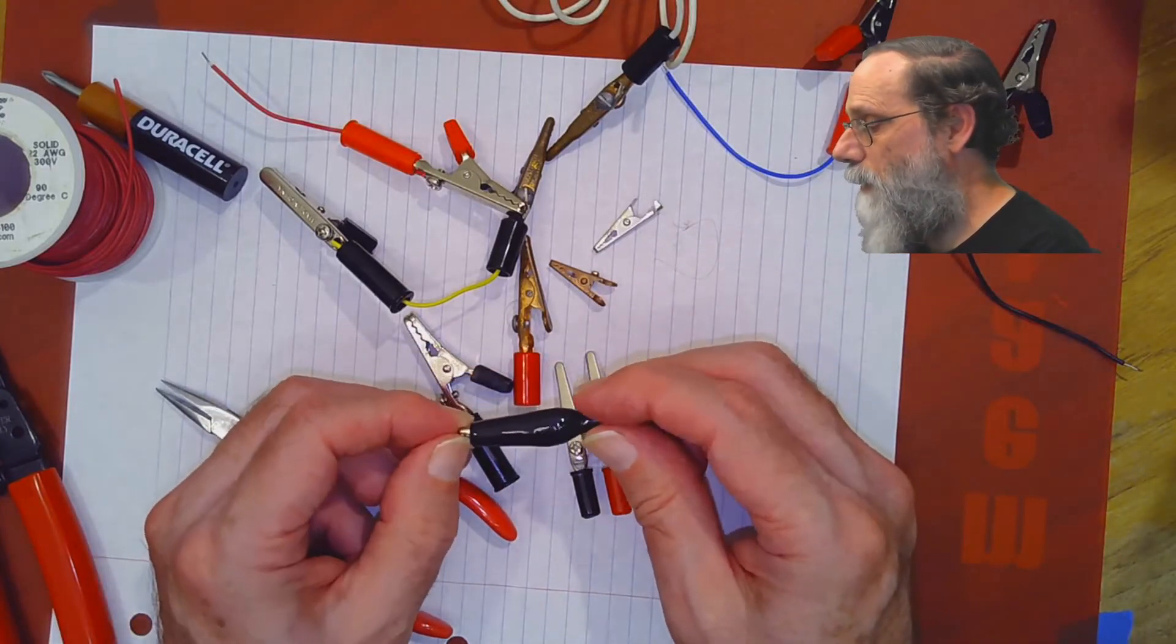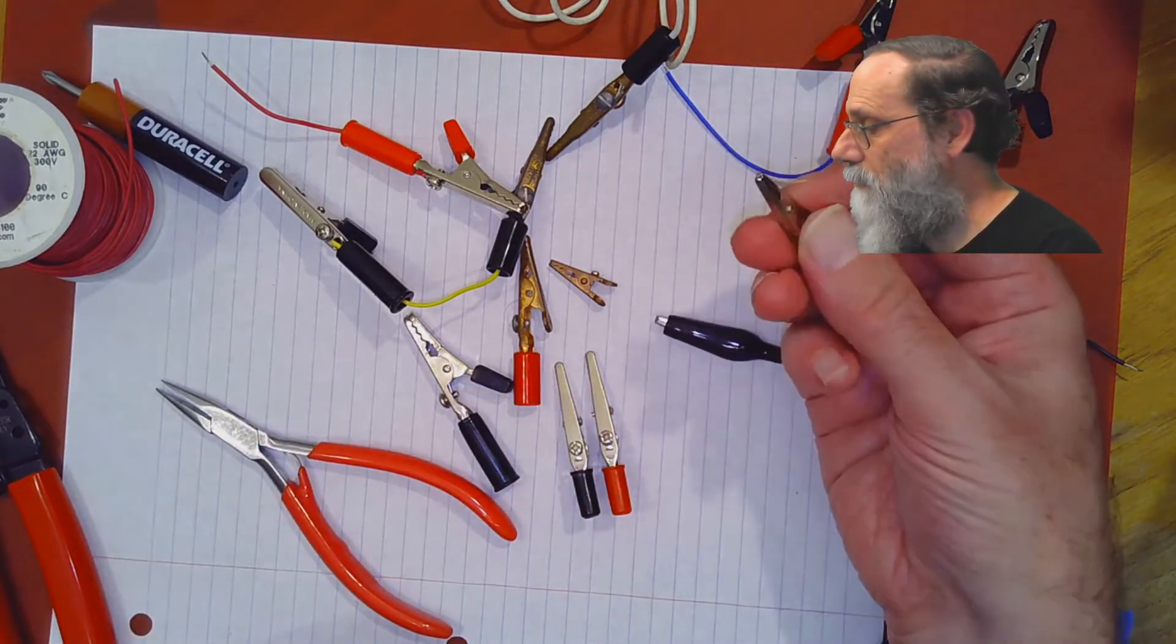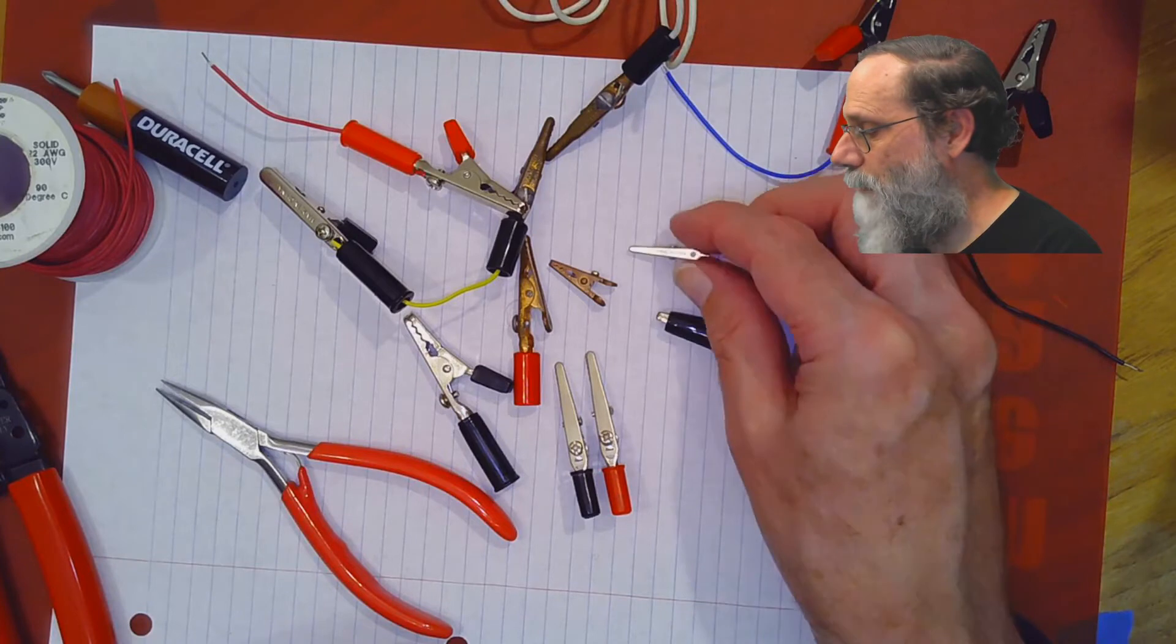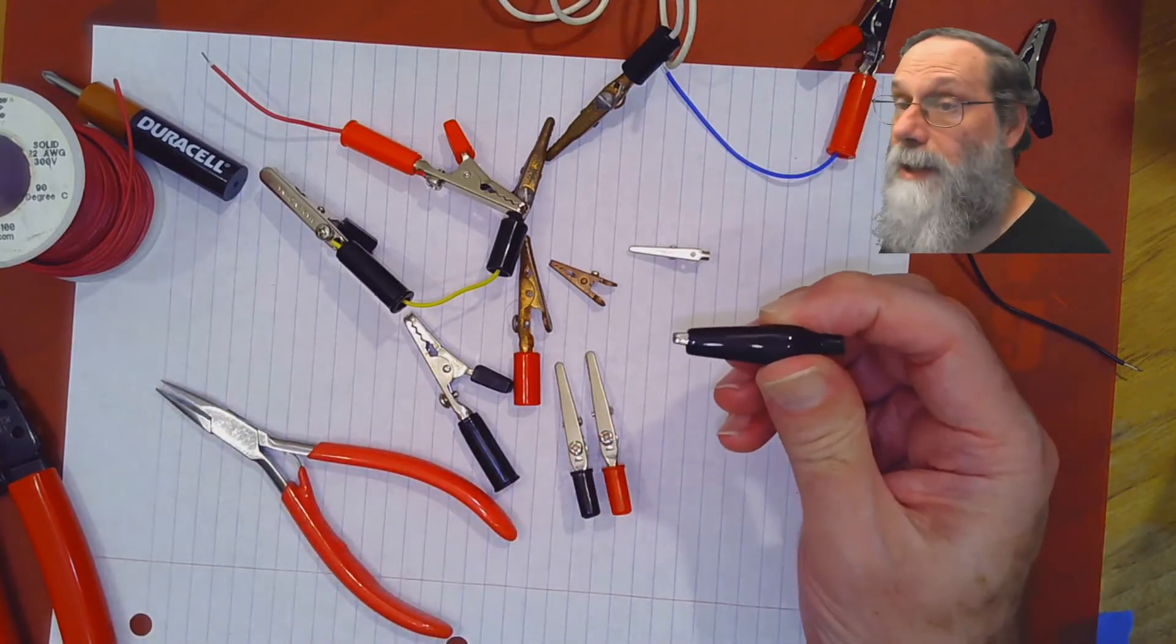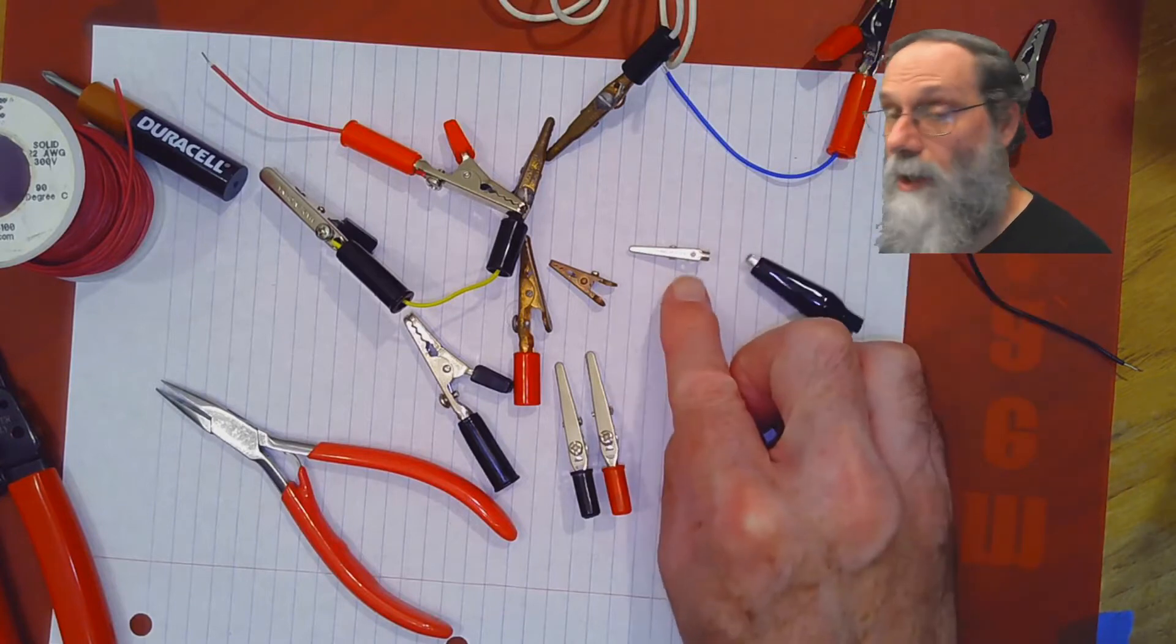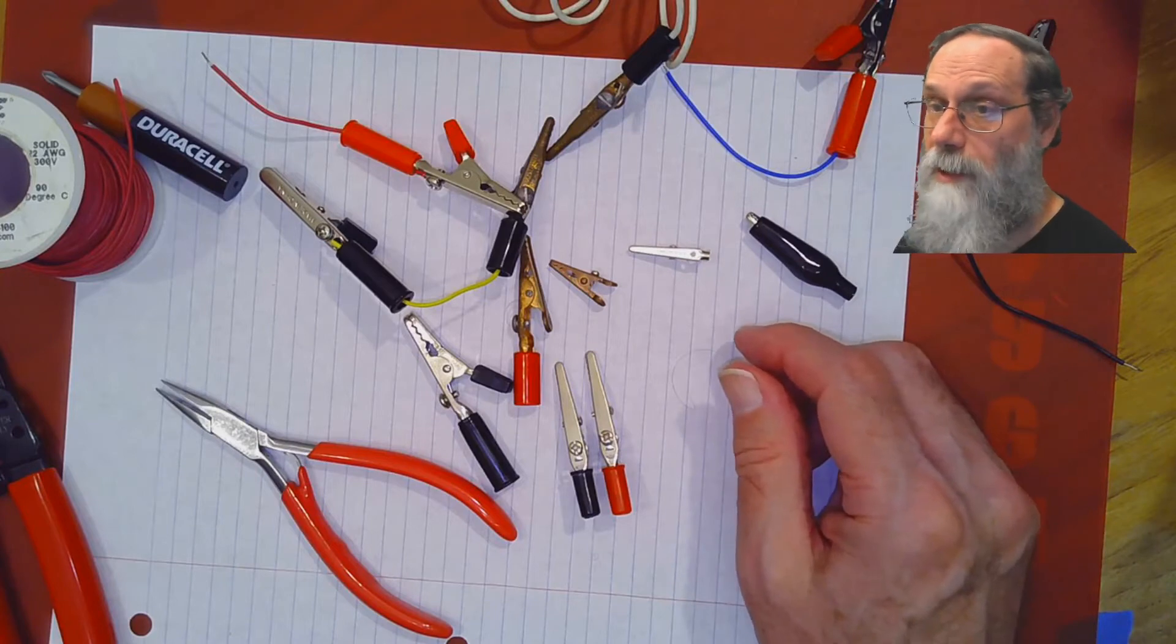You will sometimes see alligator clips with these rubber boots over them. They're usually this sort of alligator clip, and then the rubber boot just stretches over it. We're not going to be dealing with that because we don't have the solder-on ones, and we don't really need the rubber boots to protect ourselves from high voltages.